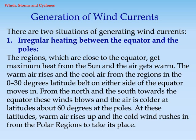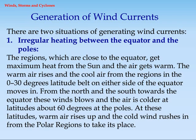Generation of wind currents. There are two situations of generating wind currents. First, irregular heating between the equator and the poles. The regions close to the equator get maximum heat from the sun and the air gets warm. The warm air rises and the cool air from the regions in the 0–30 degrees latitude belt on either side of the equator moves in. From the north and the south towards the equator these winds blow, and the air is colder at latitudes about 60 degrees at the poles. At these latitudes, warm air rises up and the cold wind rushes in from the polar regions to take its place.